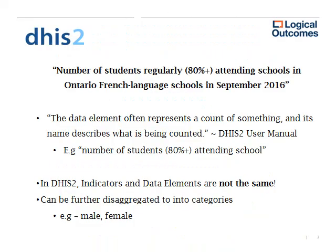Using our previous example — this adapted USDA indicator which states 'number of students regularly attending schools in Ontario French language schools in September 2016,' where 'regularly' in this case means 80% or higher.